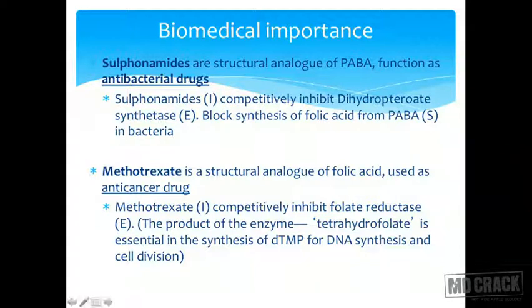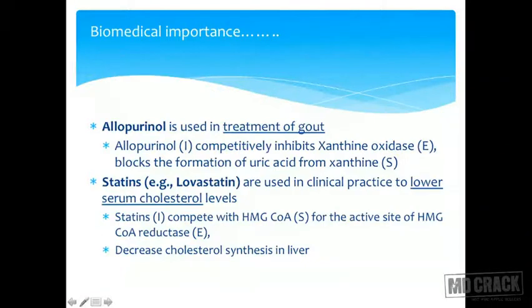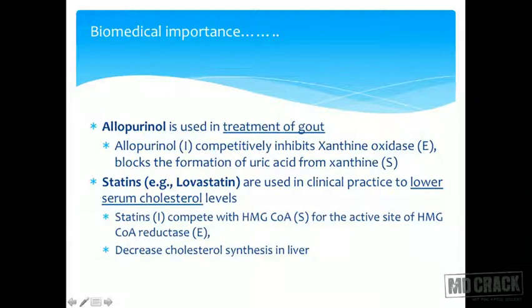Another important application of competitive inhibition is allopurinol. Allopurinol is used in the treatment of gout. Allopurinol is an inhibitor that competitively inhibits xanthine oxidase, which is the enzyme that catalyzes the formation of uric acid from xanthine. Thereby it prevents the accumulation of uric acid, which is the underlying problem in gout.